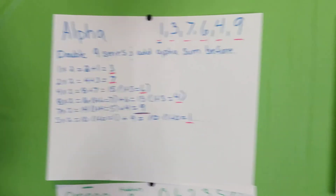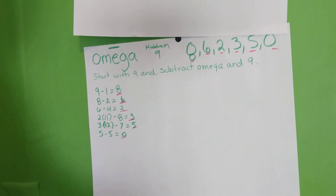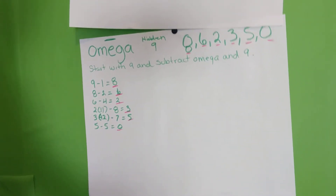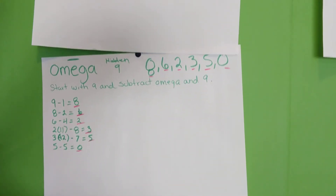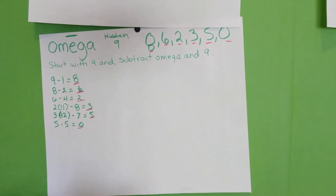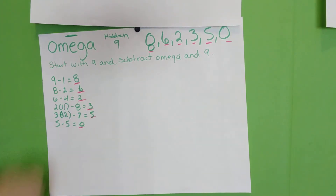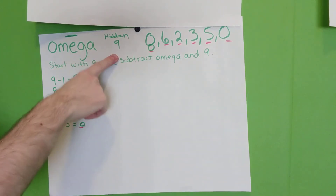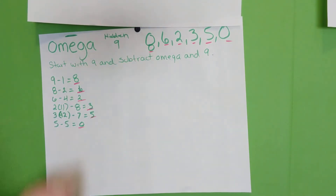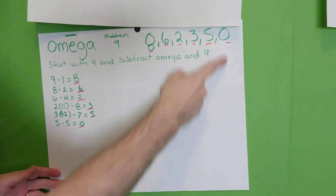Now let's talk about the omega series. The alpha and the omega series go together. Alpha is positive; omega is the negative. The omega series starts with a hidden nine — because as you know, the nines are hidden. It starts with a hidden nine and goes: 8, 6, 2, 3, 5, and 0.